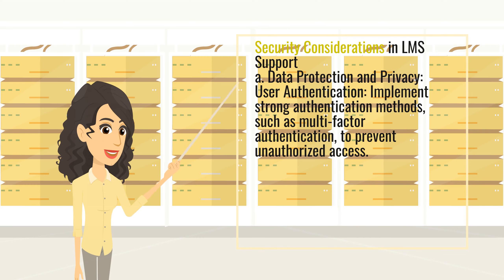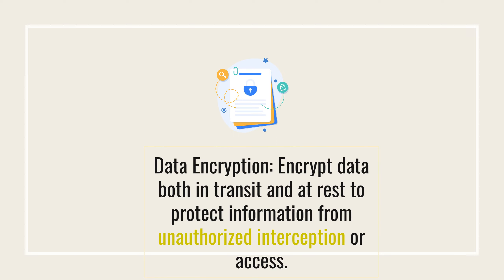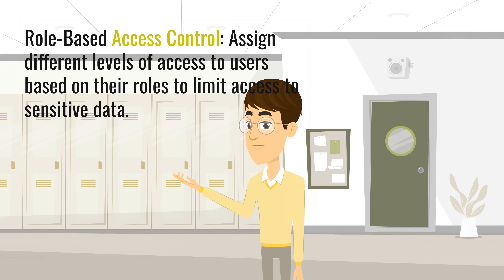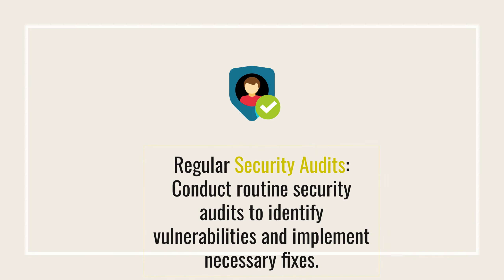Security considerations in LMS support. A. Data protection and privacy. User authentication: implement strong authentication methods such as multi-factor authentication to prevent unauthorized access. Data encryption: encrypt data both in transit and at rest to protect information from unauthorized interception or access. Role-based access control: assign different levels of access to users based on their roles to limit access to sensitive data. Regular security audits: conduct routine security audits to identify vulnerabilities and implement necessary fixes.